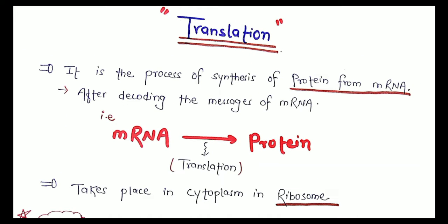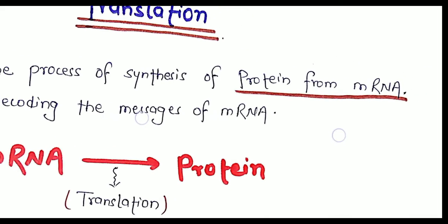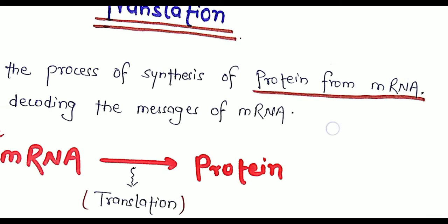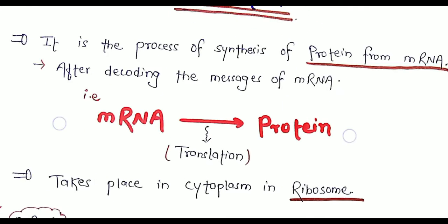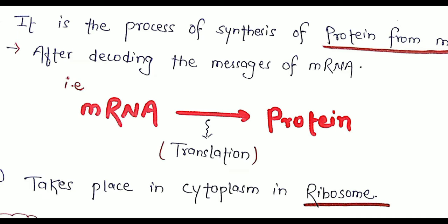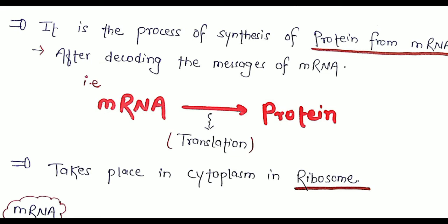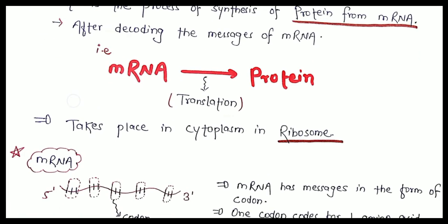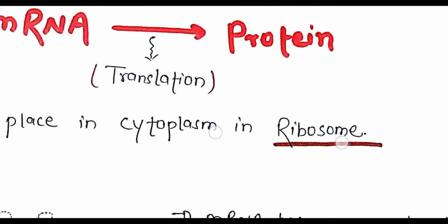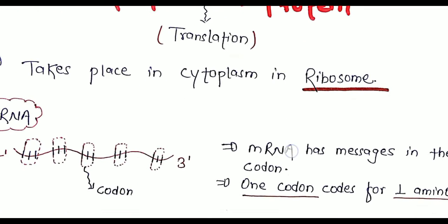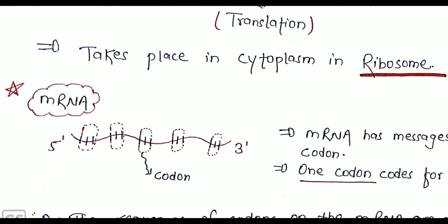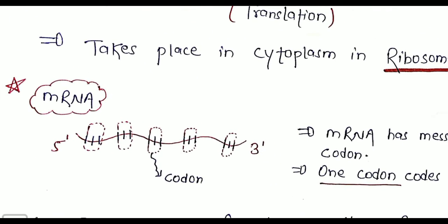Translation is the process of synthesizing protein from mRNA after reading the messages of mRNA. As shown in the diagram, mRNA is being converted into protein — that is called translation. This process usually takes place in the cytoplasm, in the ribosome, which may be a 70S ribosome or an 80S ribosome.